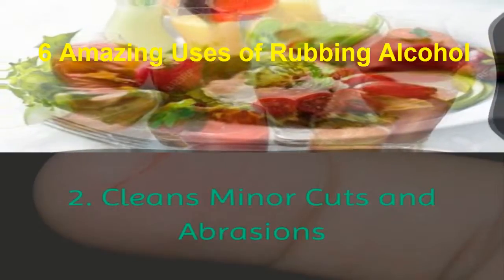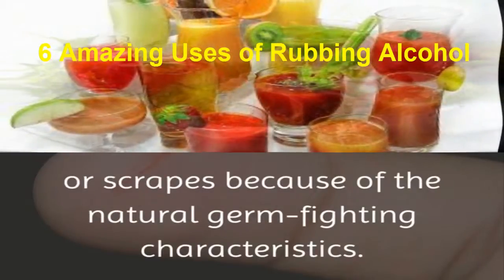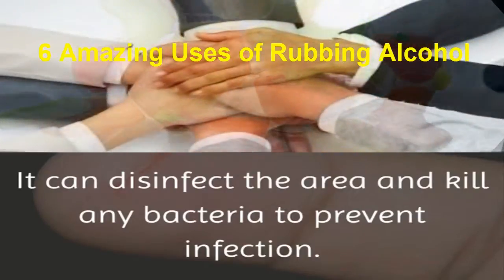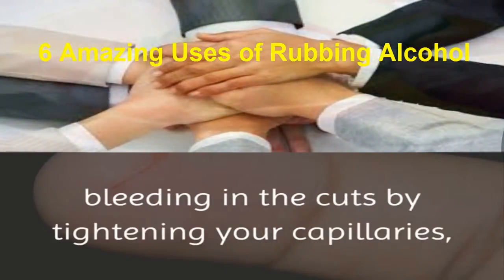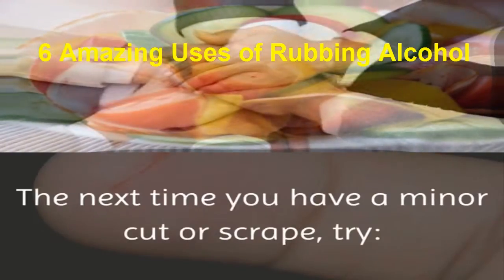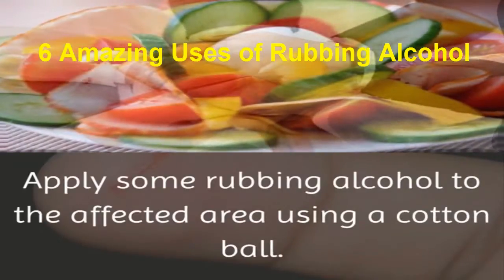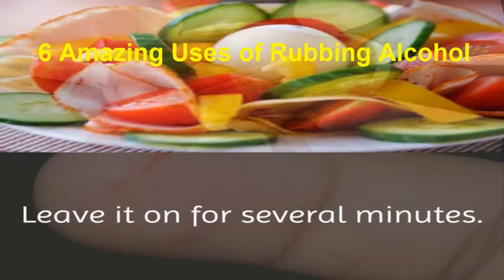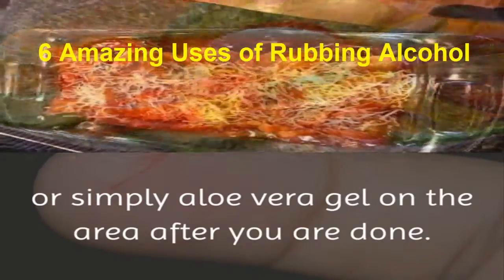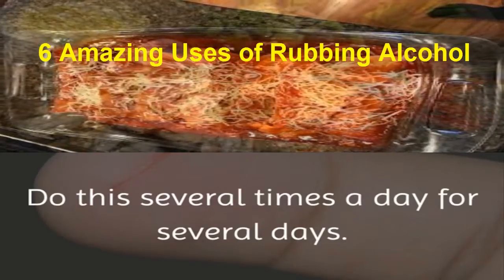2. Cleans Minor Cuts and Abrasions. Rubbing alcohol can also be used to clean minor cuts or scrapes because of its natural germ-fighting characteristics. It can disinfect the area and kill any bacteria to prevent infection. Rubbing alcohol can also help to stop bleeding in the cuts by tightening your capillaries. The next time you have a minor cut or scrape, apply some rubbing alcohol to the affected area using a cotton ball. Leave it on for several minutes. As rubbing alcohol can dry your skin, apply some moisturizing lotion or simply aloe vera gel on the area after you are done.